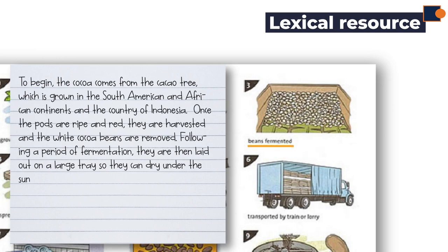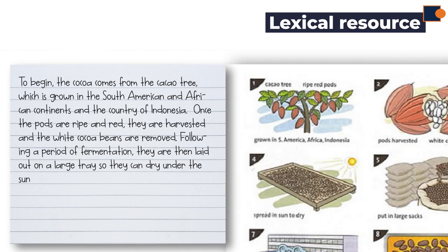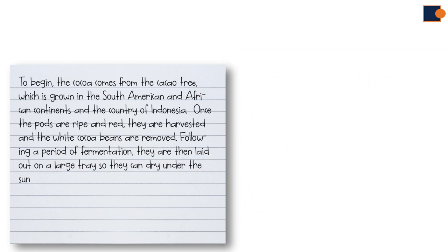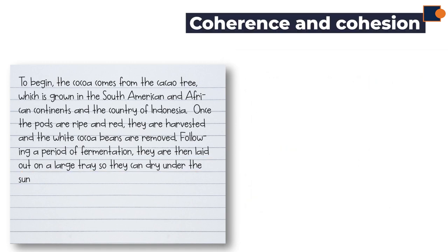The third picture says 'beans fermented,' and it is written as 'following a period of fermentation.' The fourth picture displays the note 'spread in the sun,' and this is written as 'they are laid out on a large tray so they can dry under the sun.'